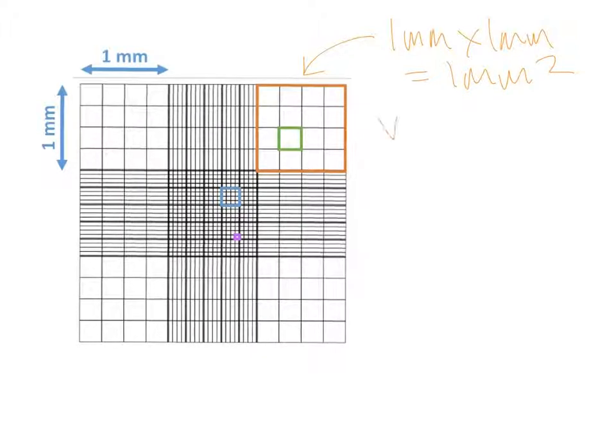Now, in terms of the volume, what we need to know is that the depth is defined by the cover slip, which is resting 0.1 millimeters above the haemocytometer. So that's the depth of our system.